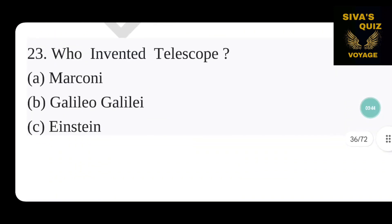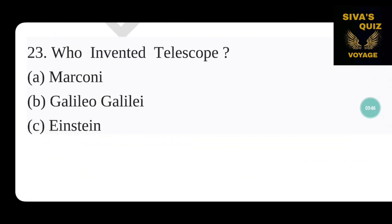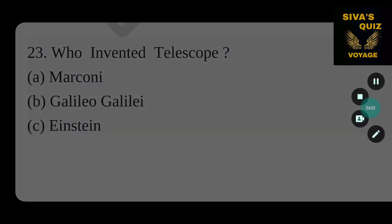Who invented the telescope? Option A is Marconi, B is Galileo Galilei, C is Einstein. The correct answer is Galileo Galilei.